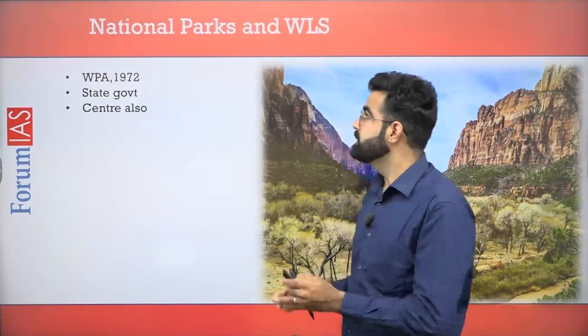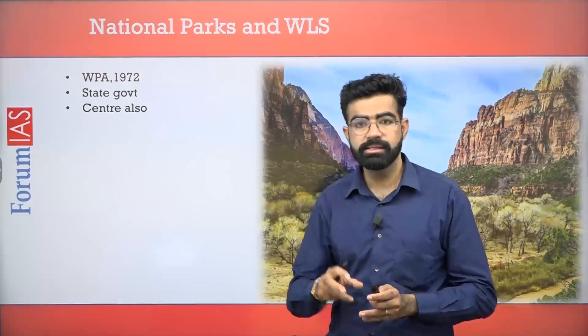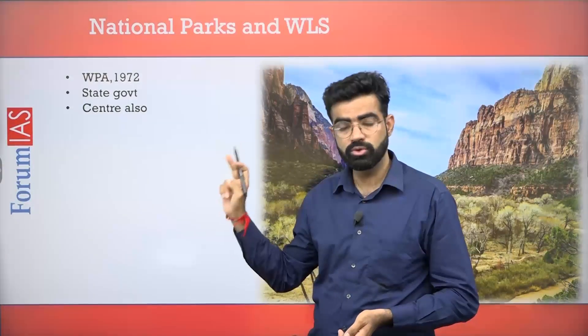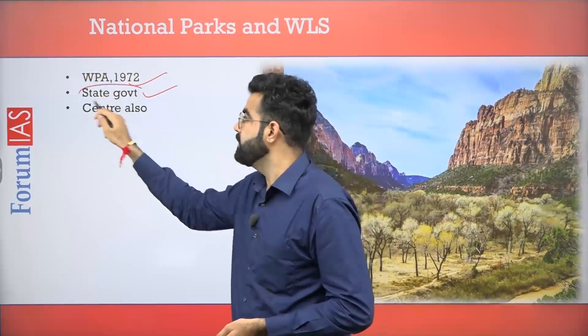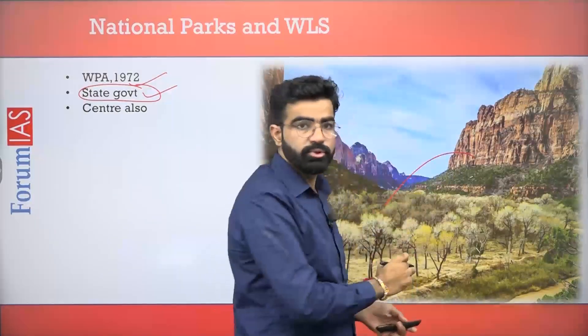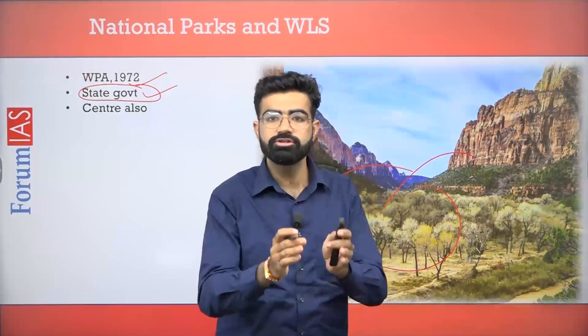So let's start. First of all, if we talk about what national parks and wildlife sanctuaries are — we have to conserve any species, or a particularly geomorphologically important area, or ecologically important area. So we took the Wildlife Protection Act of 1972. Under this act, both national parks and wildlife sanctuaries are declared. The power to declare is given to the state governments — when the state government feels that a particular area is geomorphologically, naturally, or ecologically important, they can declare a wildlife sanctuary or national park.